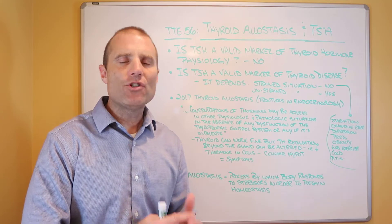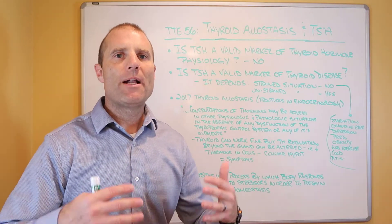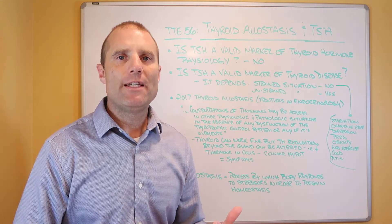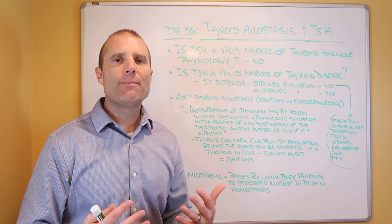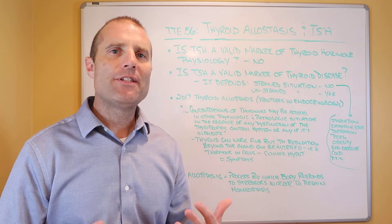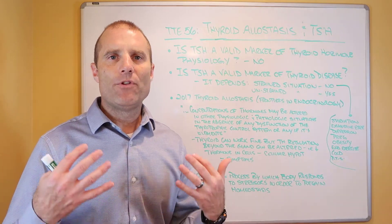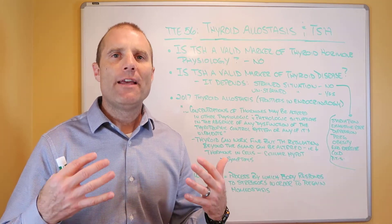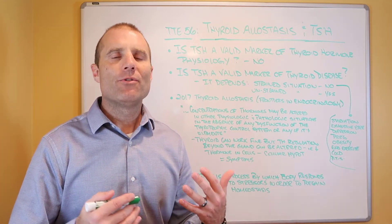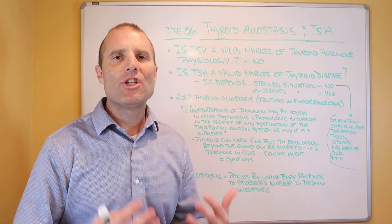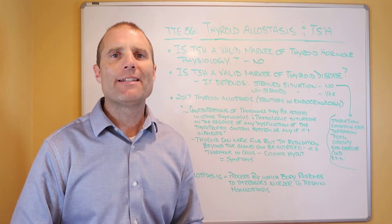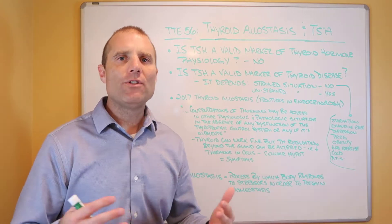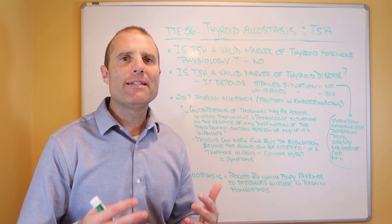In unstrained situations where there's no stress or strain on the body, the body's at rest, and there's no major challenges going on, you could use TSH as an indicator of thyroid disease — but that's really not who's coming to see most doctors. Most of the people coming to see us are chronically stressed, chronically strained, and have chronic health problems. So this is another reason why we just can't use TSH only as an indicator of thyroid hormone physiology, and we can't always use it as an indicator of thyroid disease.